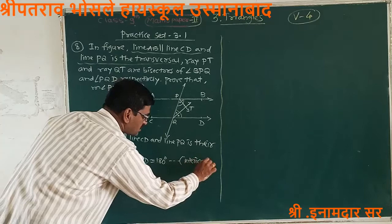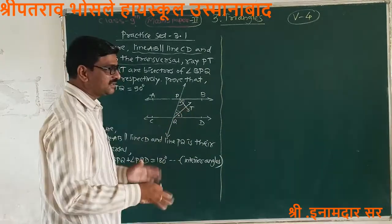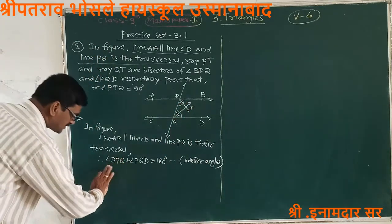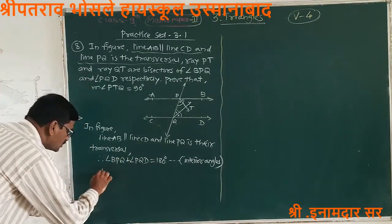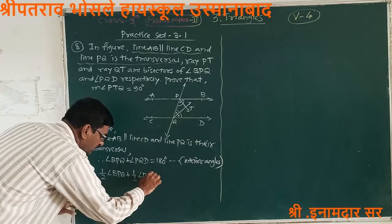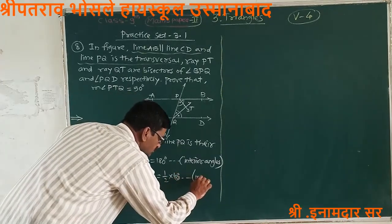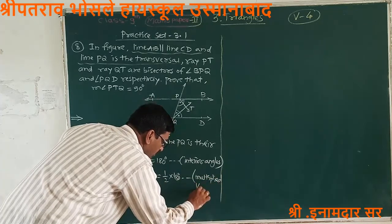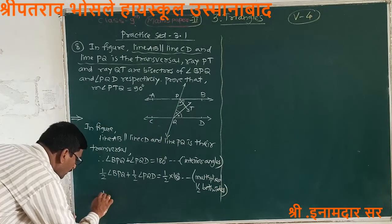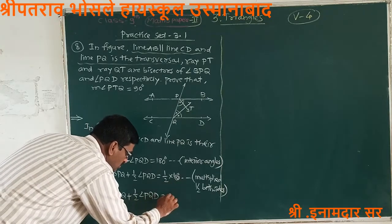Multiplying both sides by 1/2, we get: one-half of angle BPQ plus one-half of angle PQD is equal to 90 degrees. This is step 1.